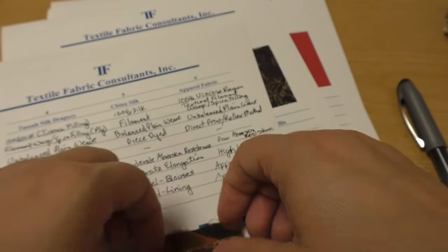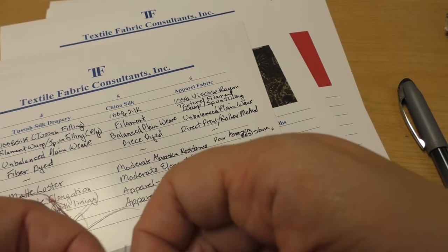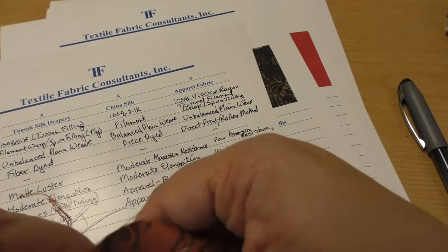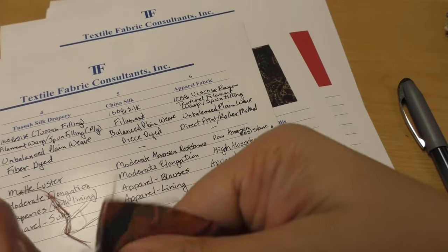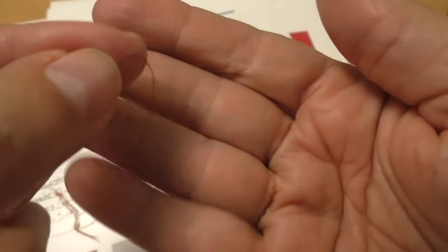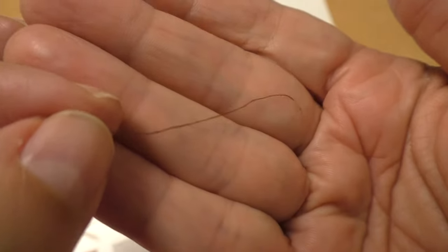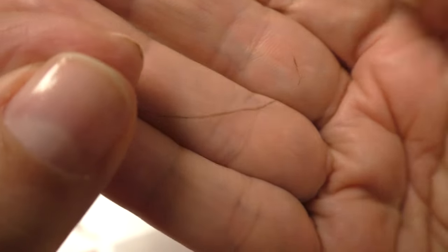Now, let's compare that with the filling yarn, which is a spun yarn in this case. All right, so this is a great example of how rayon can be both a filament and cut up to be a spun yarn.